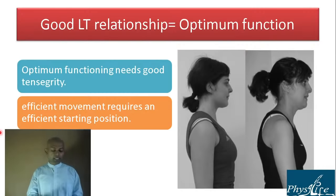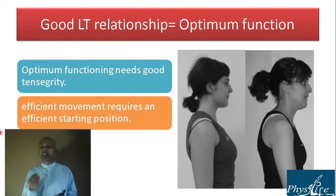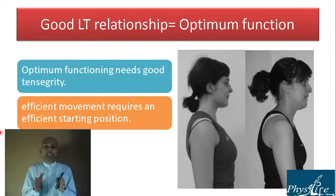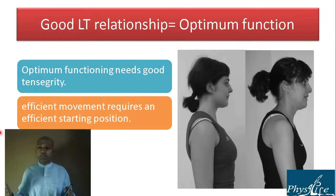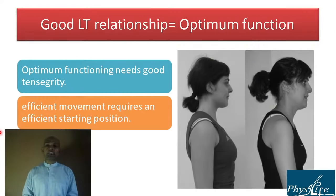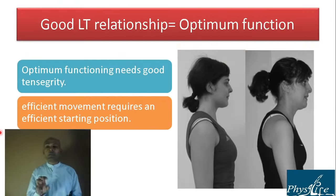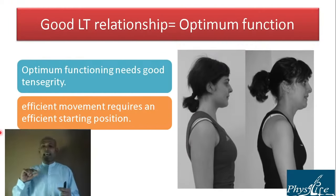Muscle imbalance happens when the starting position is not normal, because a muscle has a zone of optimum function. If you shorten or lengthen the muscle beyond that zone, it will not function optimally — this is basic biomechanics from first year. Looking at this lady, when she is in a good erect position her posture is fine, but when crouched you can see the sternocleidomastoid prominent, mouth opened, changes in the scapula and thoracic spine — local and global changes from a protruded neck.